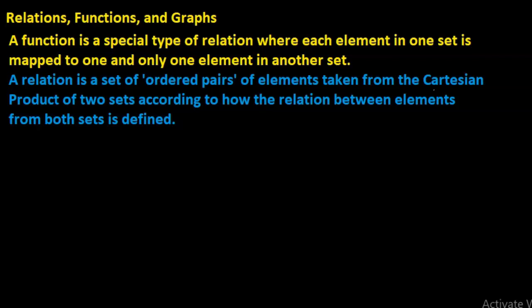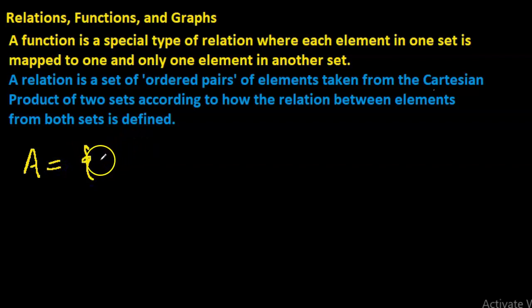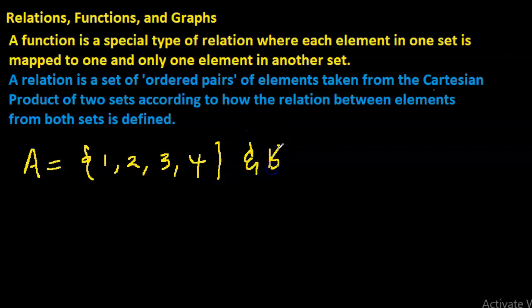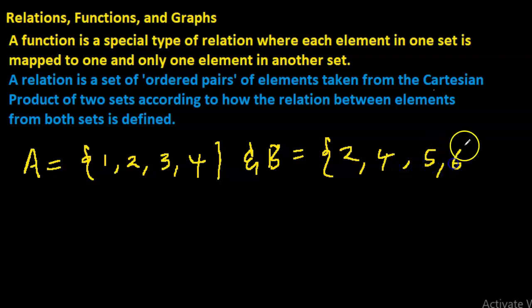Let us see if we can break down this definition. Let us say we have two sets: set A and set B. Set A consists of the elements one, two, three, and four. Set B consists of the elements two, four, five, and six. Let us find the Cartesian product of A and B.